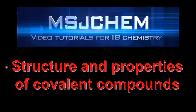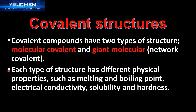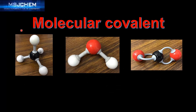This is MSJChem and in this video we look at structure and properties of covalent compounds. Covalent compounds have two types of structure: molecular covalent and giant molecular, which is sometimes called network covalent. Each type of structure has different physical properties such as melting and boiling point, electrical conductivity, solubility, and hardness. Let's start by looking at molecular covalent structures.